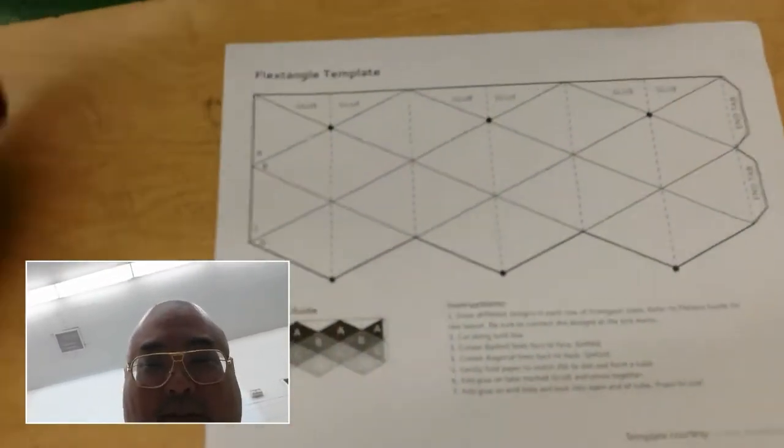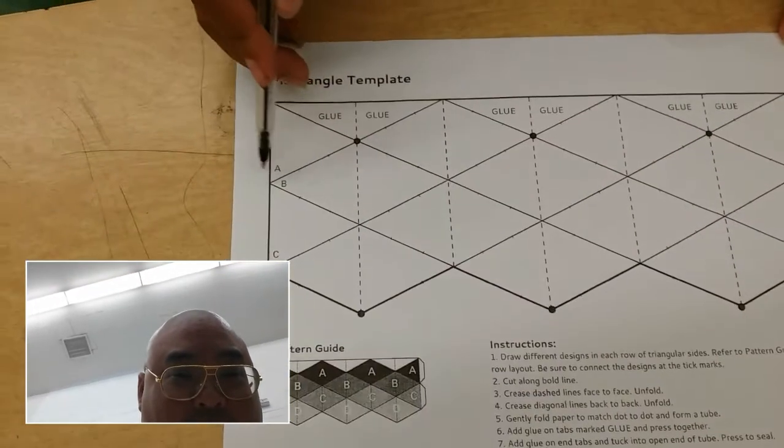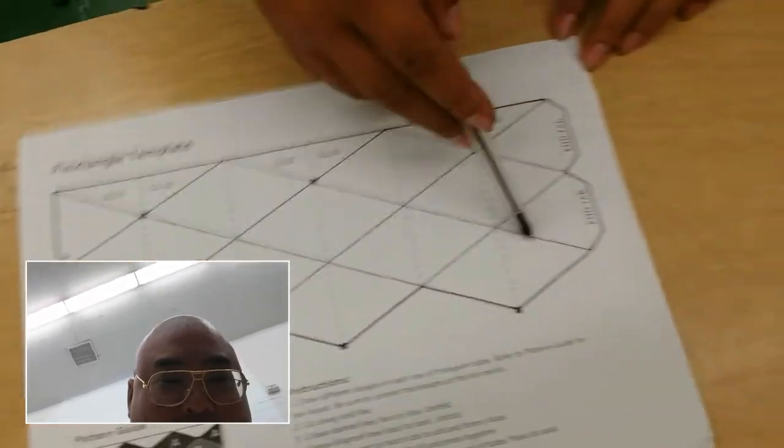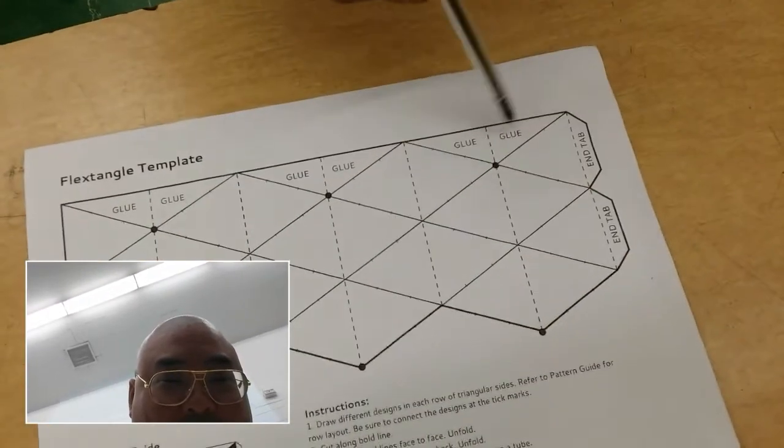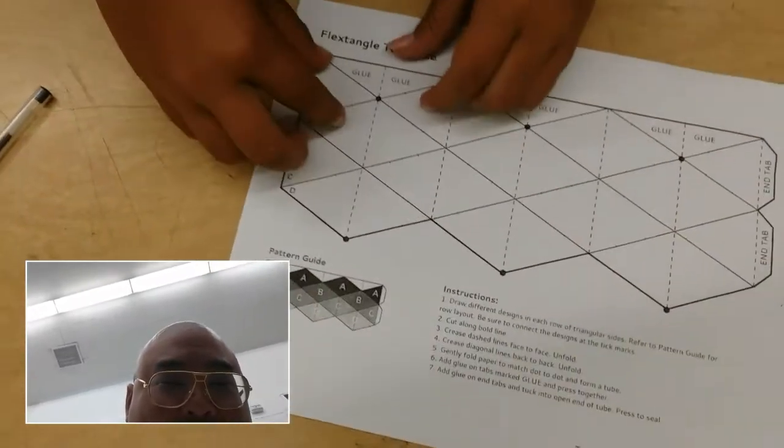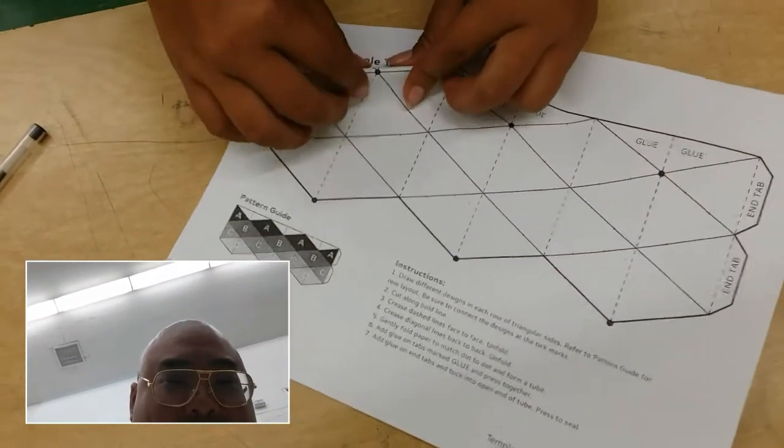Okay, so first I did one color on A, then another on B, C, and D, and then not on the end tabs for the glue. Then I cut this all out and I folded it where the dotted lines are, like right there.